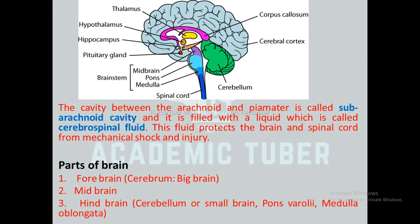The brain has three main parts: the forebrain, the midbrain, and the hindbrain. The forebrain consists of the cerebrum, also known as the big brain. The hindbrain consists of the cerebellum, also known as the small brain, as well as the pons varolii and medulla oblongata.